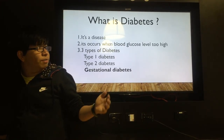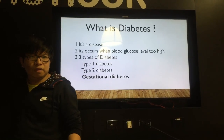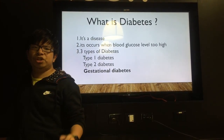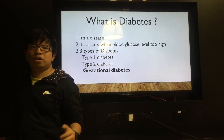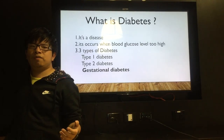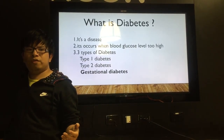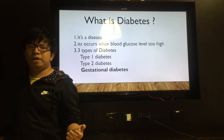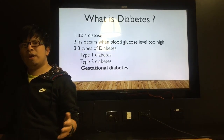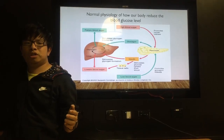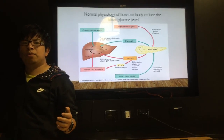What is diabetes? Diabetes is a disease which occurs when your blood glucose level is too high. There are three types of diabetes: type 1, type 2, and gestational diabetes.